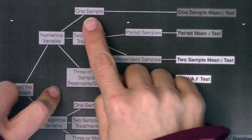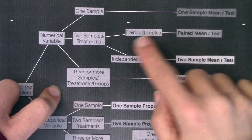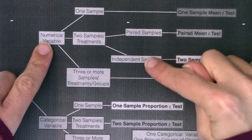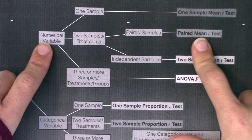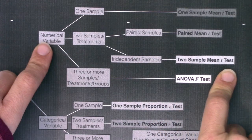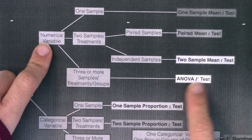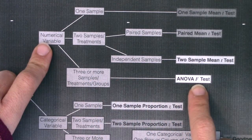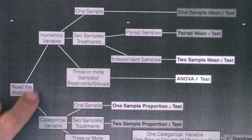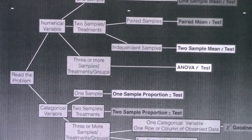If the answer is one sample, we did that in Chapter 9 — the one sample mean t-test. In Chapter 10, with two samples in mean land, we had to decide: were they paired or independent? If paired, we ran the paired mean t-test; if independent, the two sample mean t-test. For the three or more branch, that's the ANOVA F-test coming in Chapter 13. We will develop that branch in the next chapter.